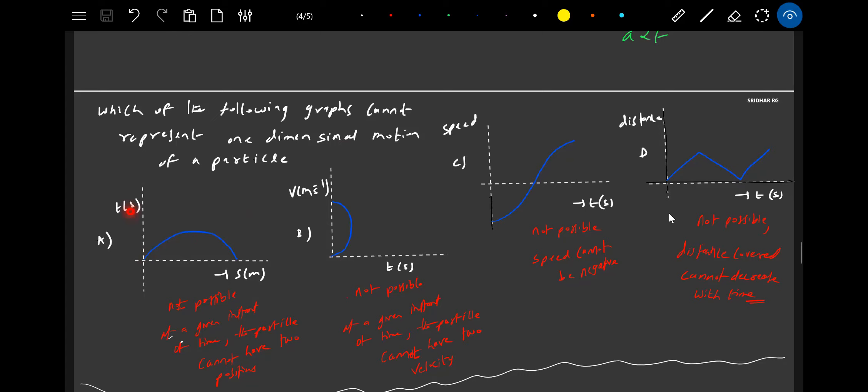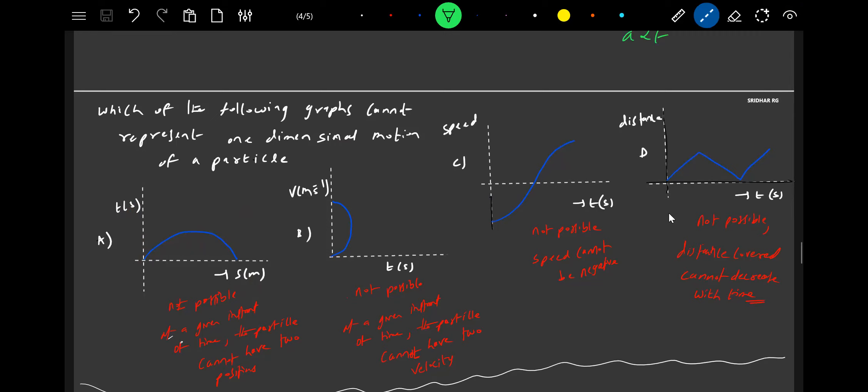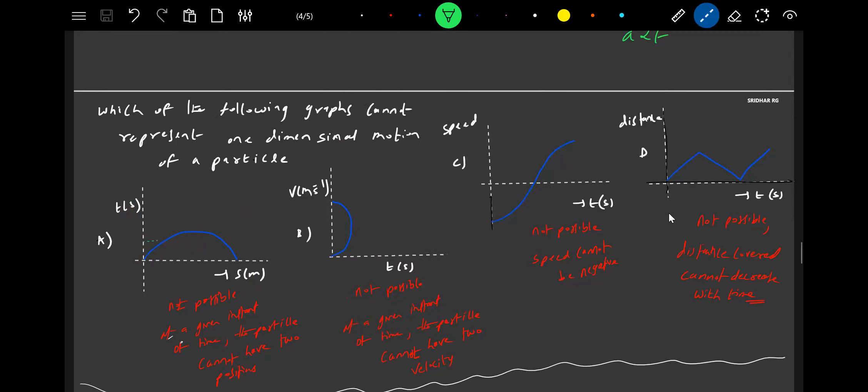The curve is a time versus position graph at a given instant of time. If you draw a horizontal line, it'll be much easier. You look at this at a given instant of time - an object cannot have two different positions. Not possible.